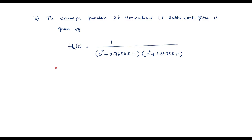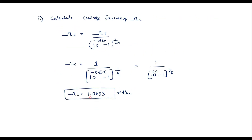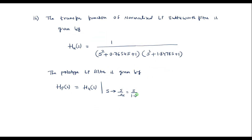Now we have to write the prototype low pass filter transfer function, Hp(s), which is nothing but H4(s) with s replaced by s/omega_c, that is s divided by 1.0693. Let me call this equation 1.